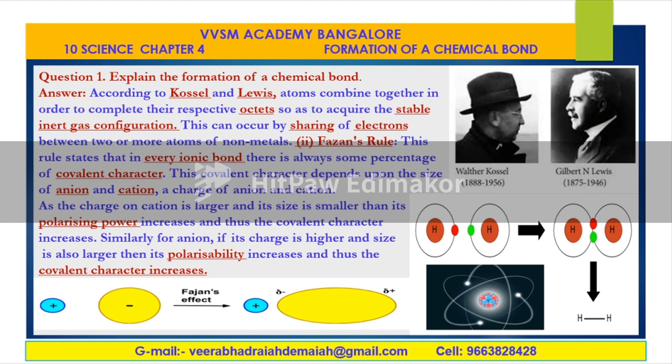For cations, the positively charged ion — its polarizing power increases, and thus the covalent character increases. Similarly, for anions, if its charge is higher and size is also larger, then the polarizability increases and thus the covalent character increases. For example, hydrogen combines with hydrogen — the sharing of electrons takes place between the two atoms of hydrogen to give the hydrogen molecule, making that bond a covalent bond.